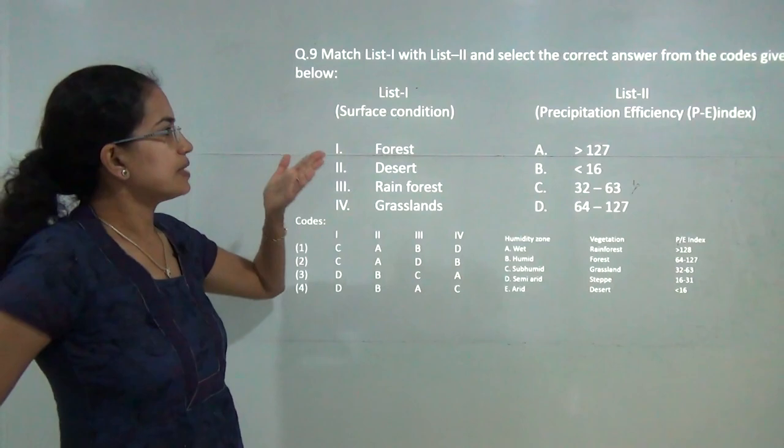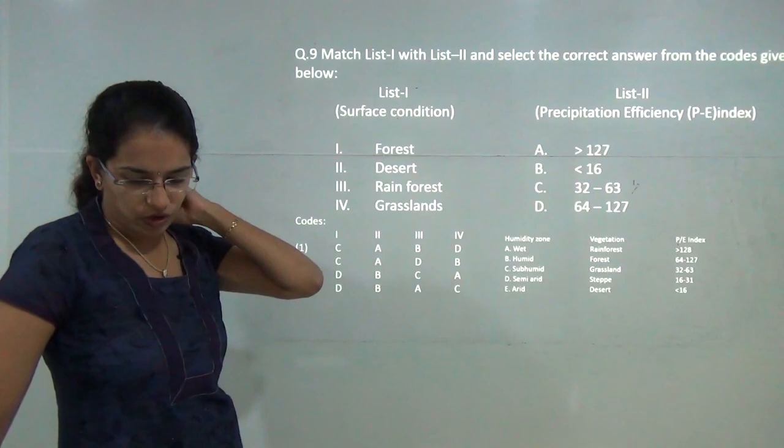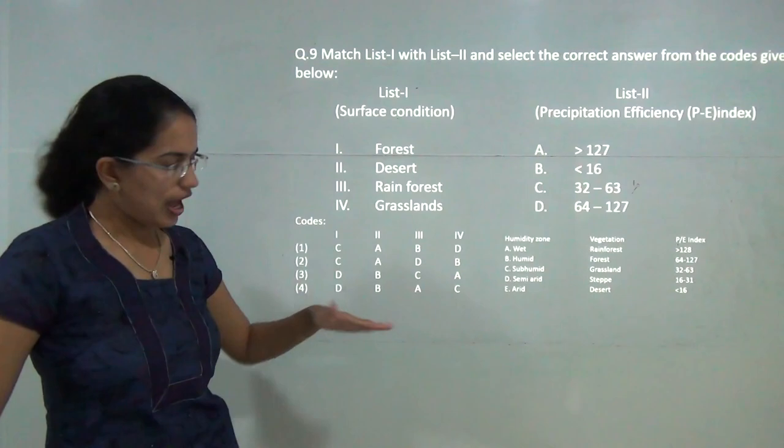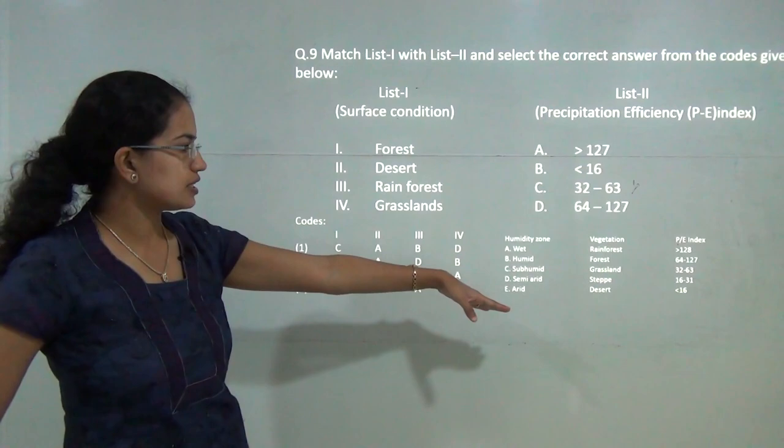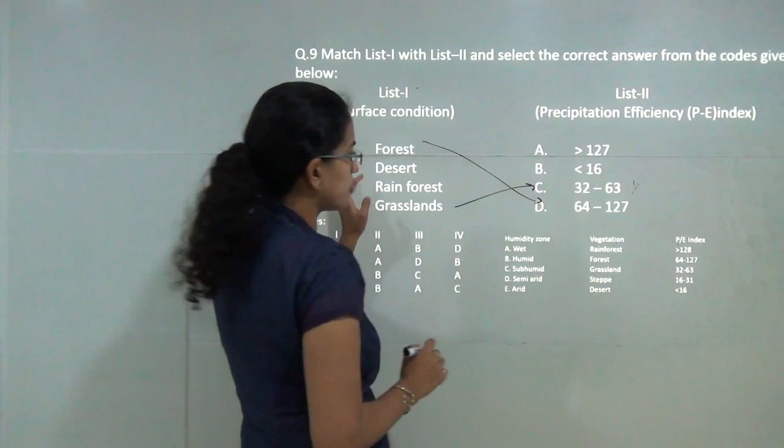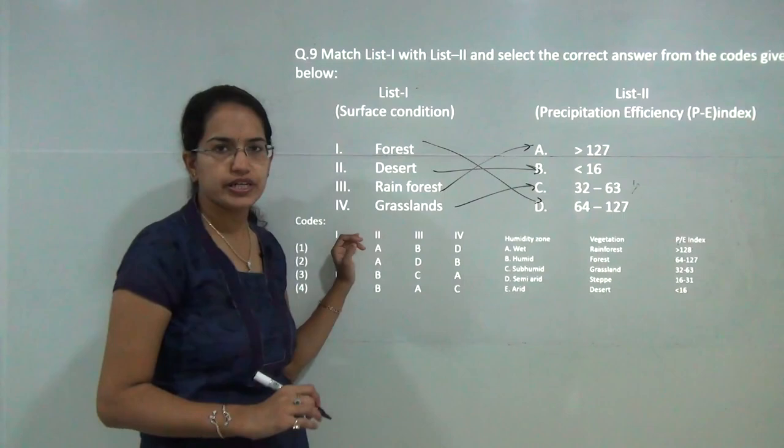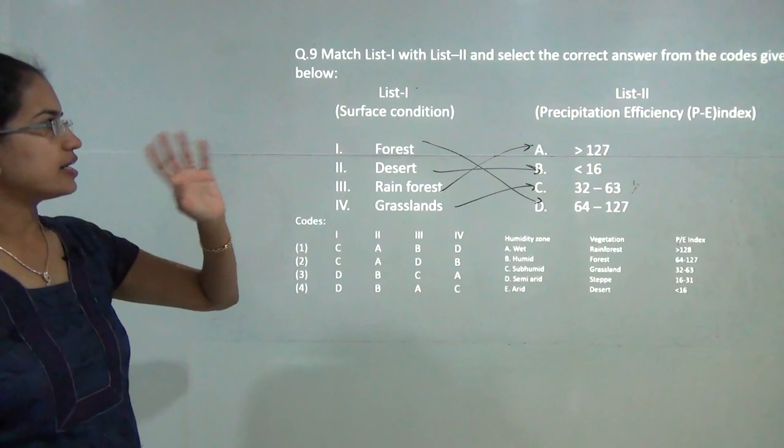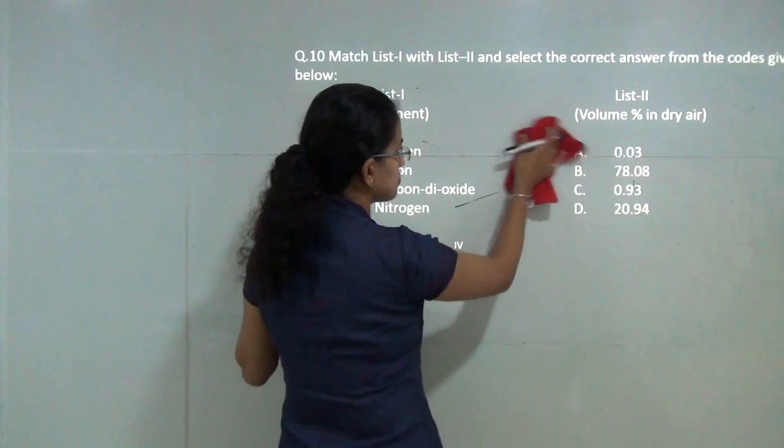Next question you have to match the precipitation efficiency with the surface conditions. This we have already covered in one of our lectures where we have talked about this in detail. You have the table here which talks about the various humidity zones and the precipitation index. You have forest which ranges from 64 to 127, then you have the grasslands which range from 32 to 63. You have deserts which are very less below 16 and rain forest which are above 127. These are the correct matches and the various humidity zones that are given under the PE index.